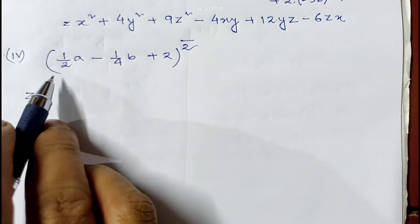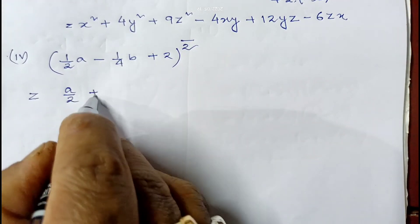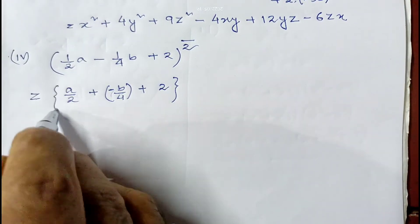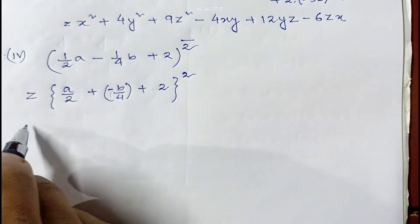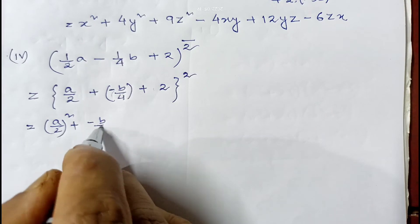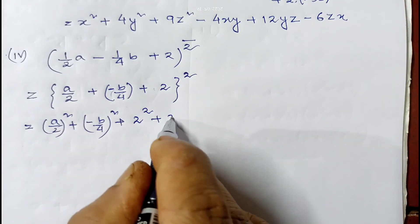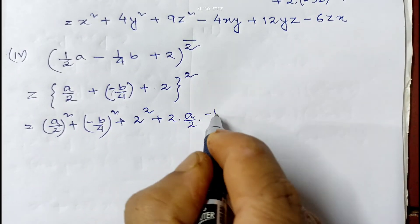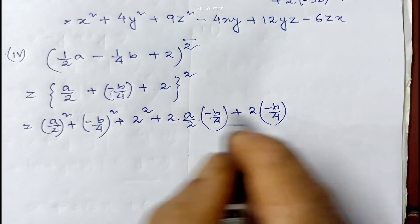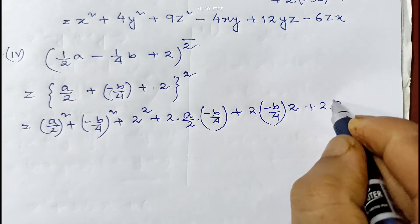In the fourth part of question number 1, it is given: expand (a/2 − b/4 + 2)². Here we consider a/2 as x, −b/4 as y, and 2 as z. Using the formula (x+y+z)², we get x² + y² + z² + 2xy + 2yz + 2zx. So it is (a/2)² + (−b/4)² + 2² + 2·(a/2)·(−b/4) + 2·(−b/4)·2 + 2·2·(a/2).